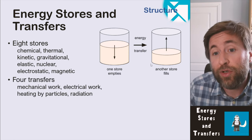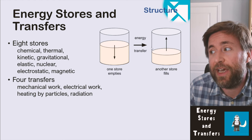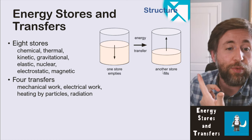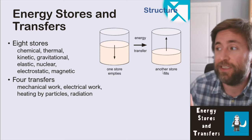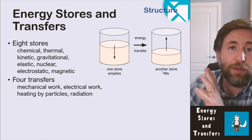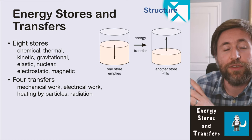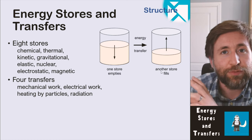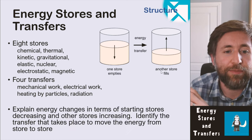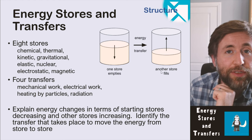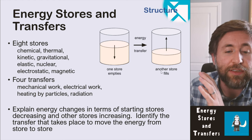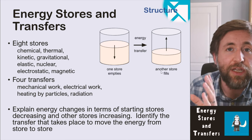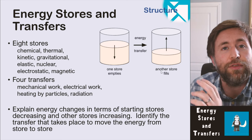There are four different transfers — four ways to get energy from one store into another: mechanical work, electrical work, heating by particles, and heating by radiation. You'll make this topic a lot simpler if you memorise those eight stores and four transfers and get used to recognising them. Whenever you're asked to explain energy transfer, just identify the starting store, the final store, and the transfer.